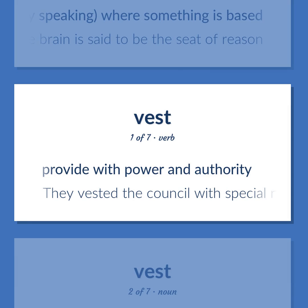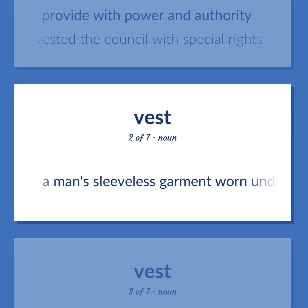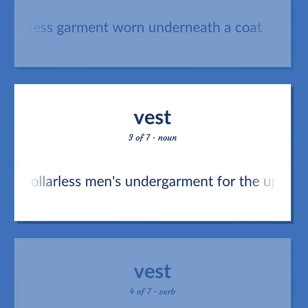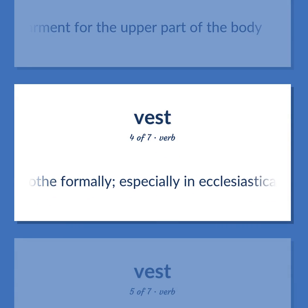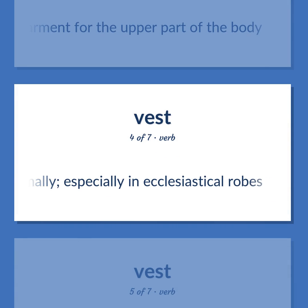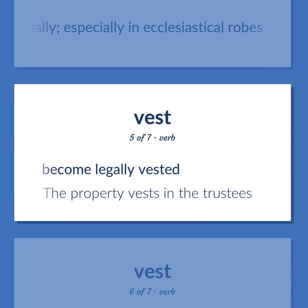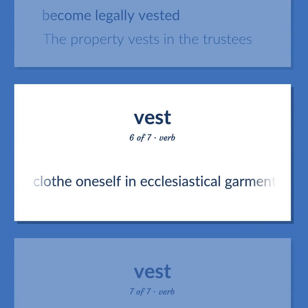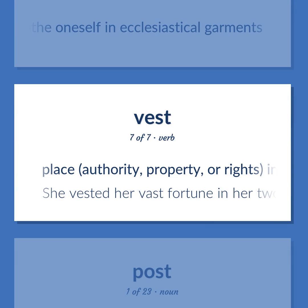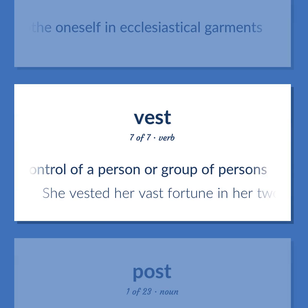Vest: Provide with power and authority — they vested the council with special rights. A man's sleeveless garment worn underneath a coat. A collarless men's undergarment for the upper part of the body. Clothe formally, especially in ecclesiastical robes. Become legally vested — the property vests in the trustees. Clothe oneself in ecclesiastical garments. Place authority, property, or rights in the control of a person or group of persons — she vested her vast fortune in her two sons.